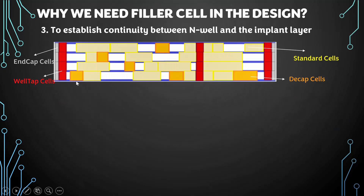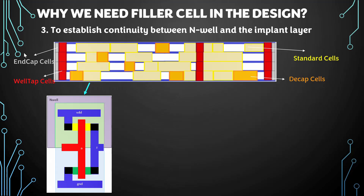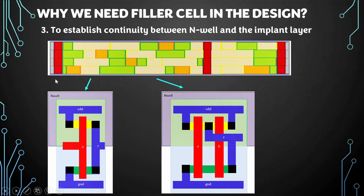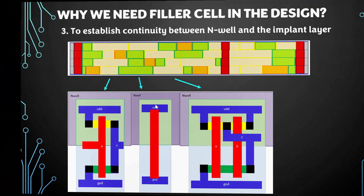For example, let's say this is one standard cell and its layout looks like this, and there is another standard cell. Since there is no cell in between, there will be a gap and the N-well will not be connected to any well tap. Now if the design is filled with filler cells, the filler cell comes and sits here, the N-well becomes continuous, and finally this N-well gets tapped to the well taps on either side. This is how continuity between N-well and the implant layer is maintained.